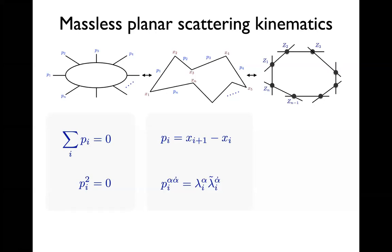The on-shell condition can be solved by introducing spinor helicity variables. I write my four-momentum as a two-by-two matrix with chiral and anti-chiral spinor indices. The on-shell condition tells me the determinant of this matrix should vanish, so it has rank one and I can factorize: P equals λ times λ-tilde, a chiral and an anti-chiral spinor. This introduces a redundancy because rescaling λ and λ-tilde oppositely doesn't change the momentum P.